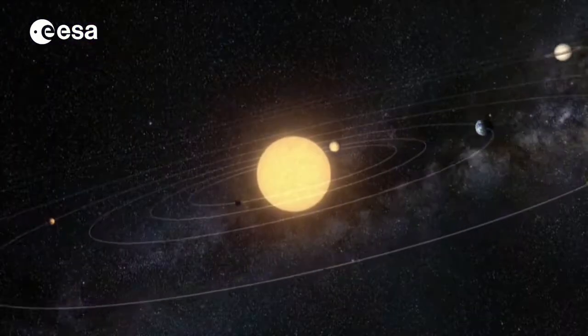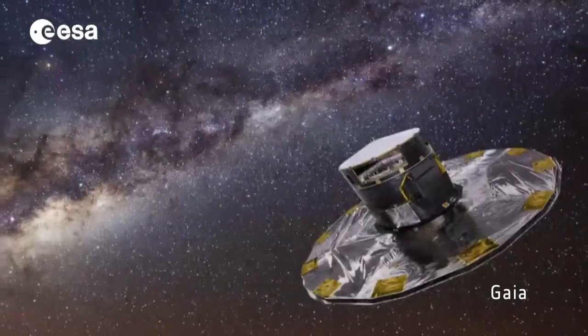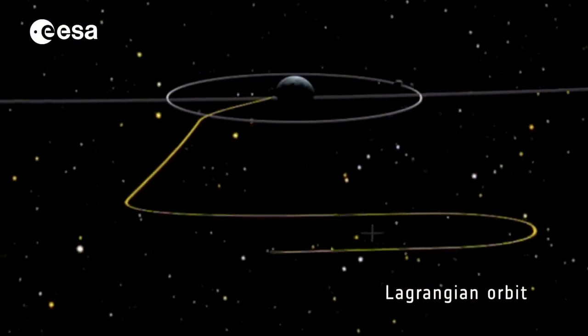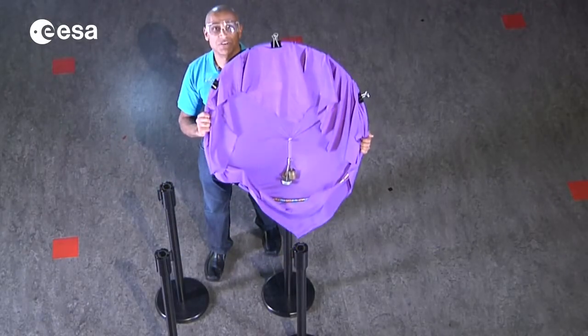So whether it's planets orbiting the Sun, or space telescopes like Soho and Gaia orbiting the Lagrangian points, the gravity well is an excellent tool to help us visualize the physics involved.